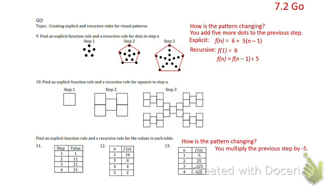Well, hopefully you said we're multiplying by negative 5. Negative 5 times negative 5 would make 25. 25 times negative 5 is negative 125, and negative 125 times negative 5 is positive 625.